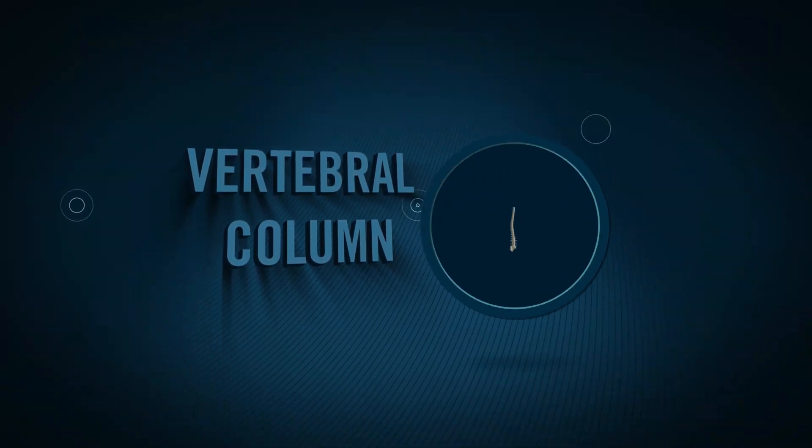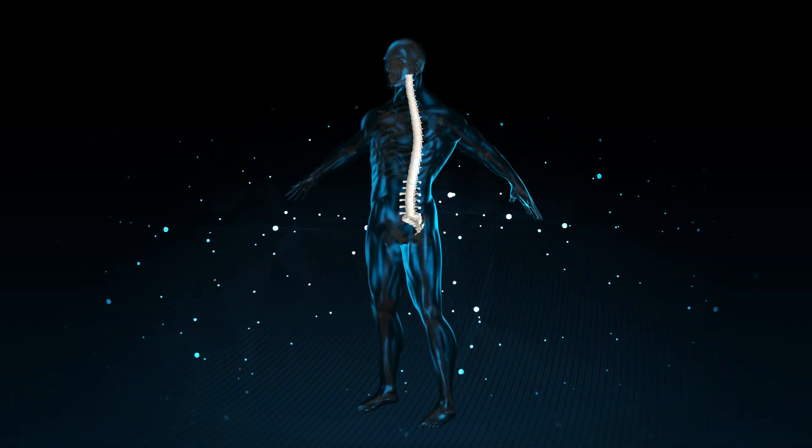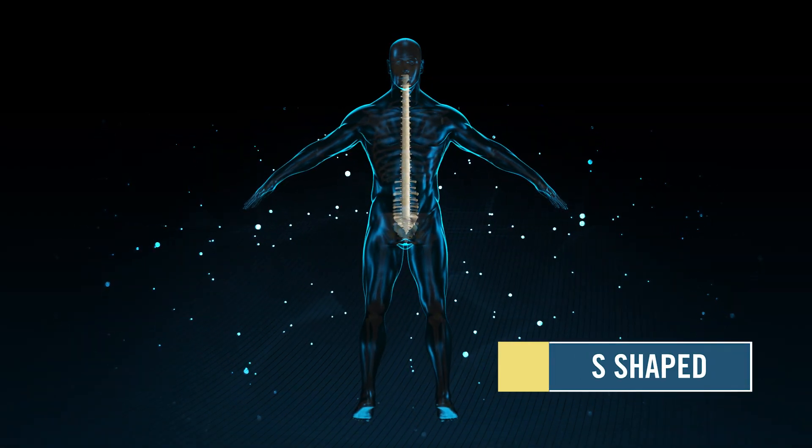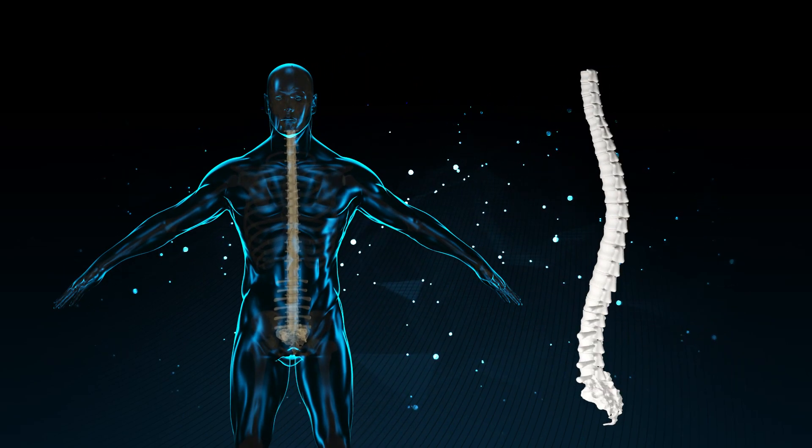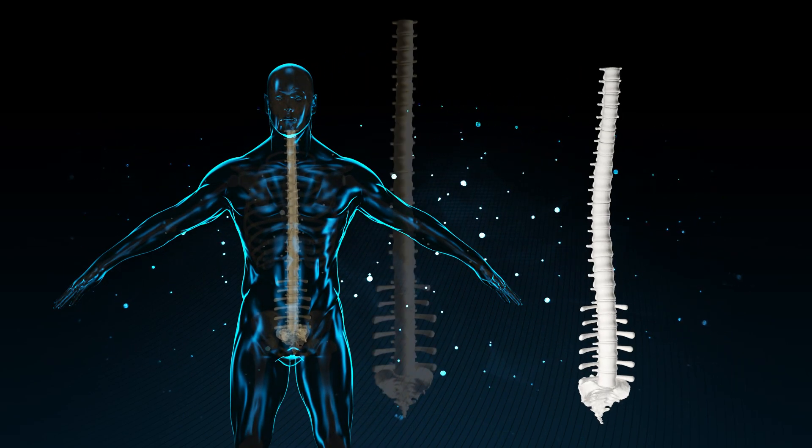Vertebral column: The vertebral column or backbone is S-shaped which consists of 26 vertebrae. The vertebral column is divided into five regions.